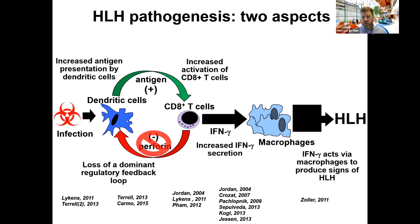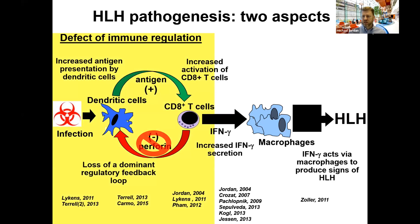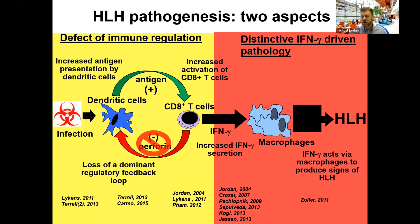In more detail: if you lose perforin, you lose this dominant regulatory feedback loop, which leads to heightened antigen presentation — particularly by dendritic cells — heightened T-cell activation especially by CD8 T cells, tremendous increases in cytokines with interferon gamma being most notable, which through its ability to activate macrophages leads to HLH. There is defective immune regulation in these patients, plus a very distinctive interferon gamma-driven immunopathology recognizable as the disease itself.